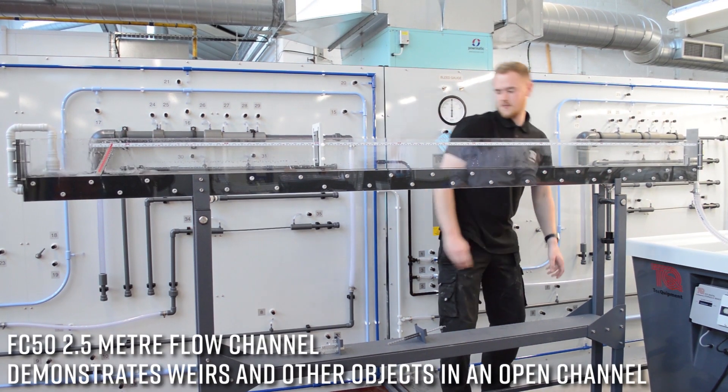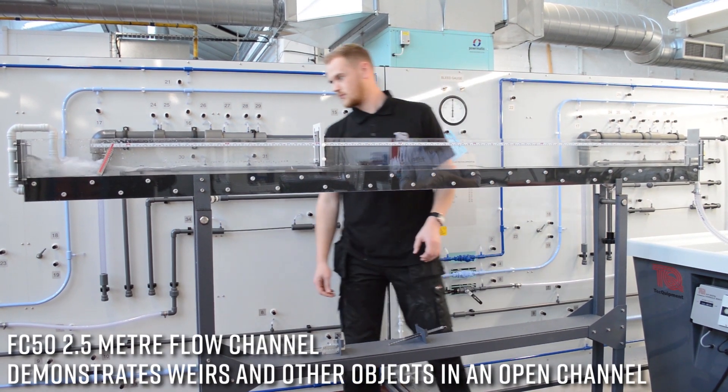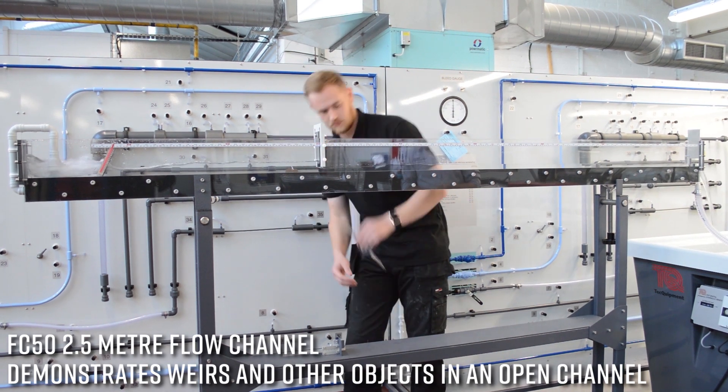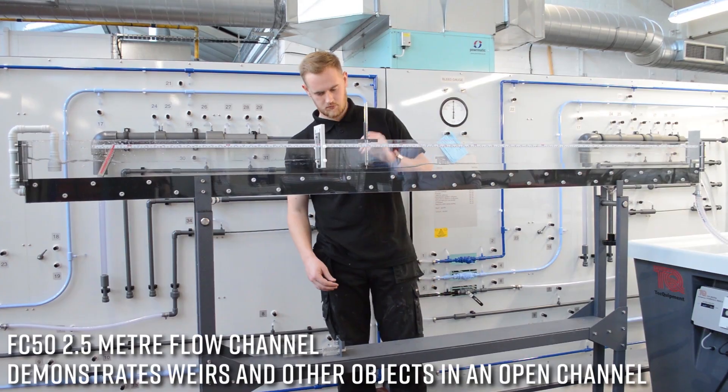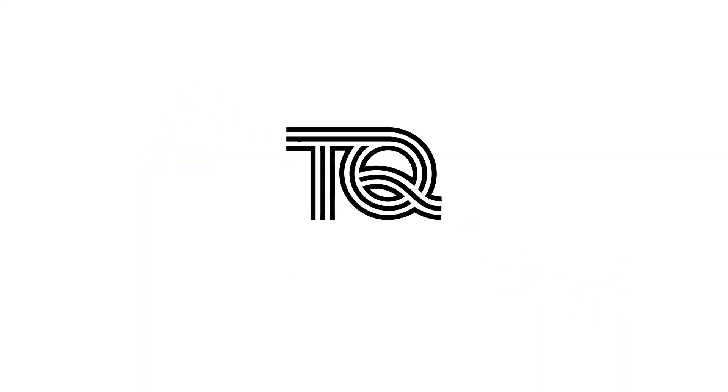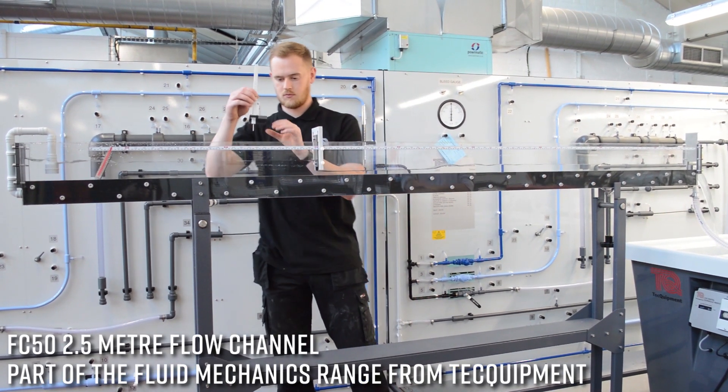Introducing the FC50 2.5m flow channel that demonstrates flow over weirs and other objects in an open channel. This piece of equipment is part of the Fluid Mechanics range from Tech Equipment and is designed primarily for use with Tech Equipment's hydraulic bench.